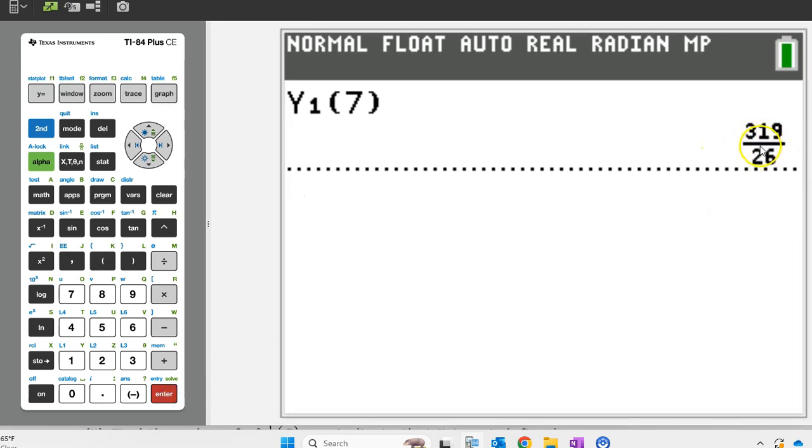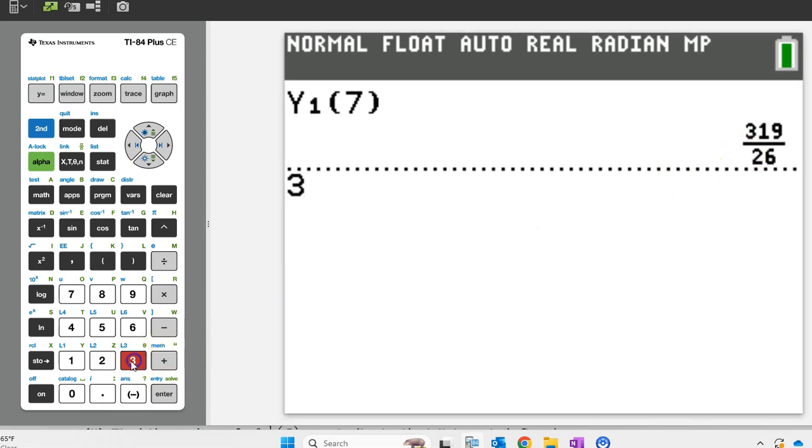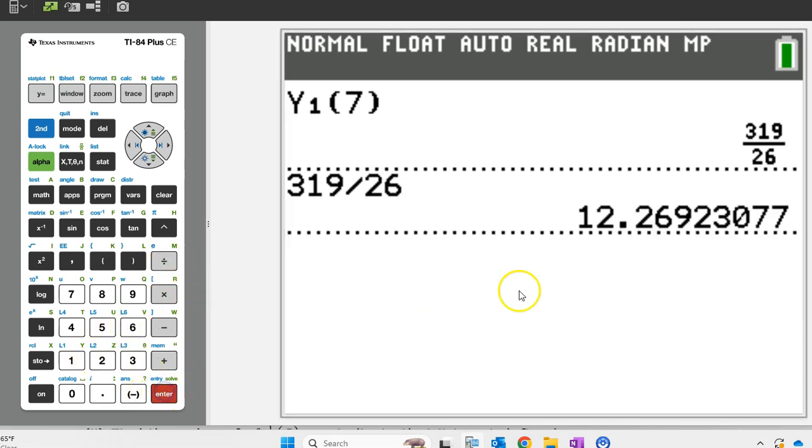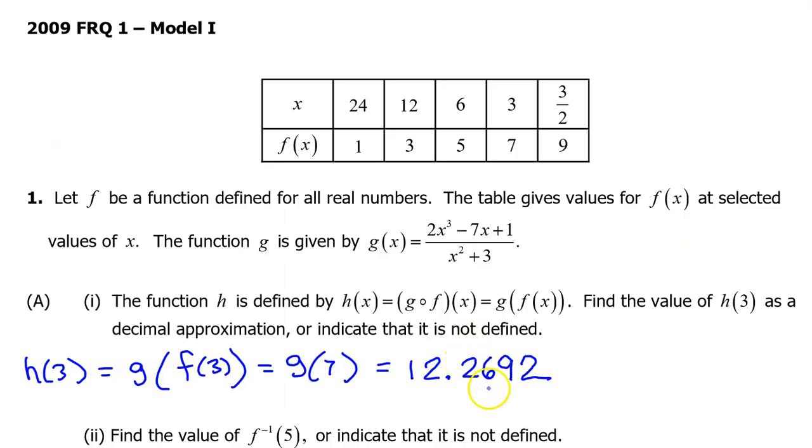We want a decimal approximation, not a fraction. So let's take the extra step of typing in 319 divided by 26. Kabam! Decimal approximation, 12.2692. The College Board will accept three decimal places. However, we have found that students will often make a mistake trying to round to three decimal places. So we recommend always using four decimal places and never attempting to round.